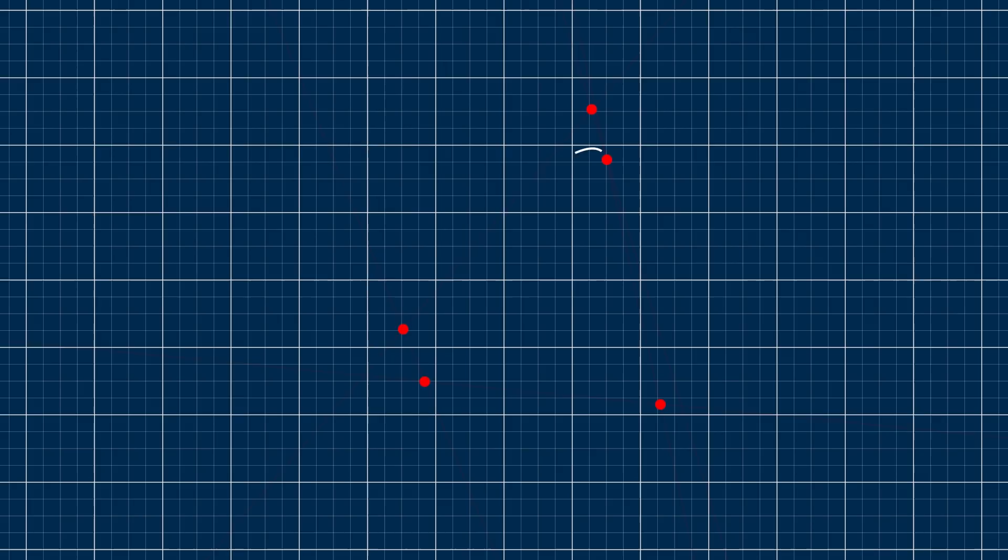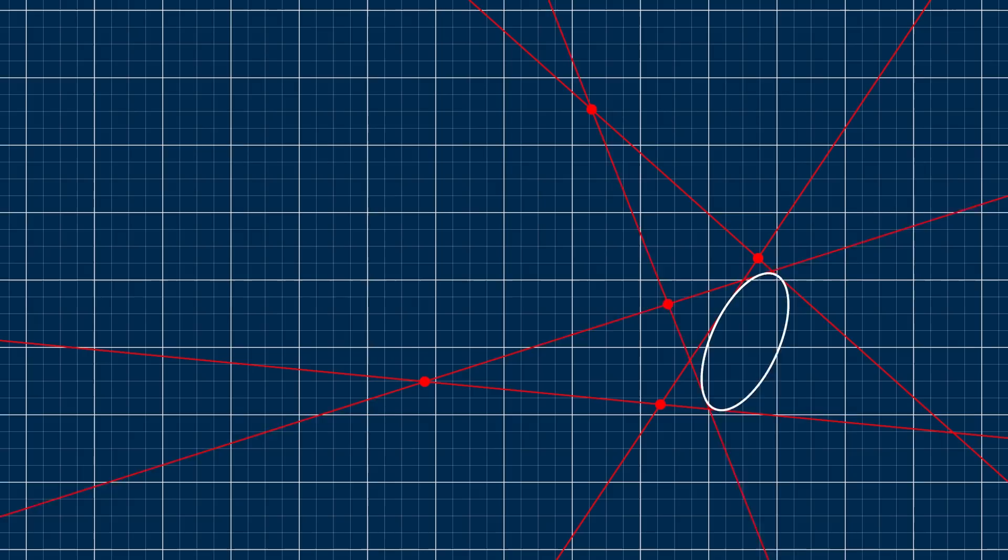So that's five points. But did you know that five tangent lines also uniquely define a conic? Just to clarify, tangent means the conic touches a line once, and it's parallel where it touches.